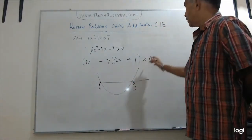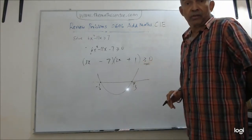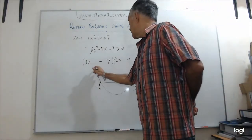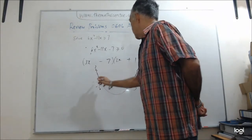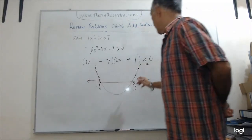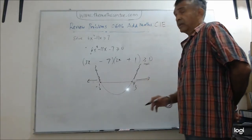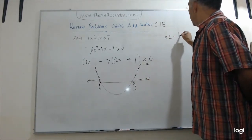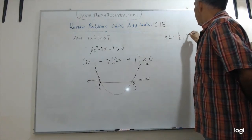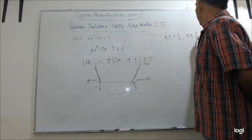Once you've done that, then we look at this part here, bigger than or equal to 0. So we're looking at this part of the curve above the x-axis. We want values of x this way and values of x this way. Therefore your final answer will be x ≤ -1/2 or x ≥ 7/3. And we are done.